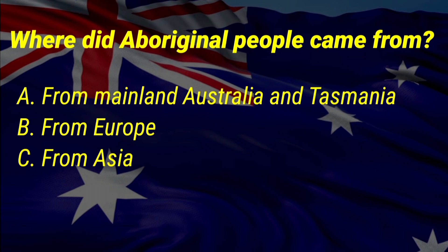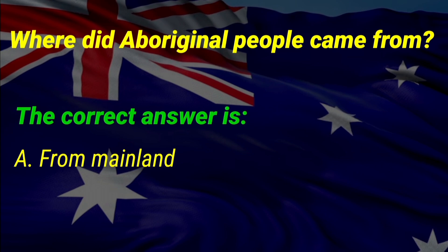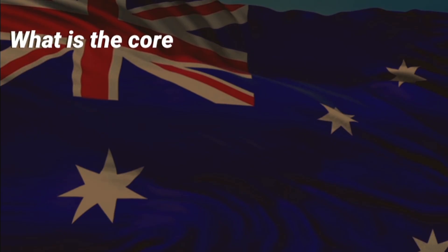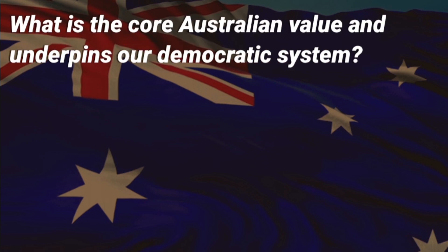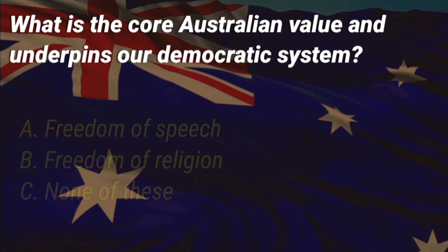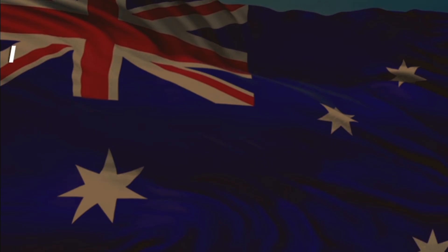Where did Aboriginal people come from? A: from mainland Australia and Tasmania, B: from Europe, C: from Asia. The correct answer is A, from mainland Australia and Tasmania. What is the core Australian value that underpins our democratic system? The correct answer is A, freedom of speech.